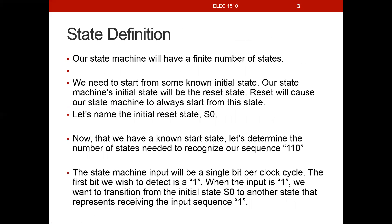What we're going to do now is define some different states. We'll have a finite number of states. We always start from some known initial state, which we'll call the reset state — if we hit a reset button, we'd go back to this known initial state. We'll name the initial state S0. Finite state machines are sequential circuits driven by a clock; we'll use flip-flops to implement them and clock through from the present state to the next state.